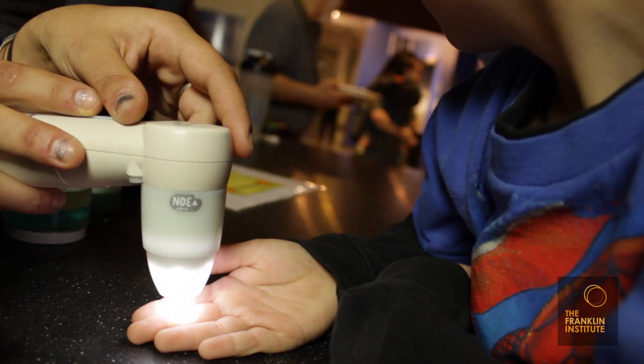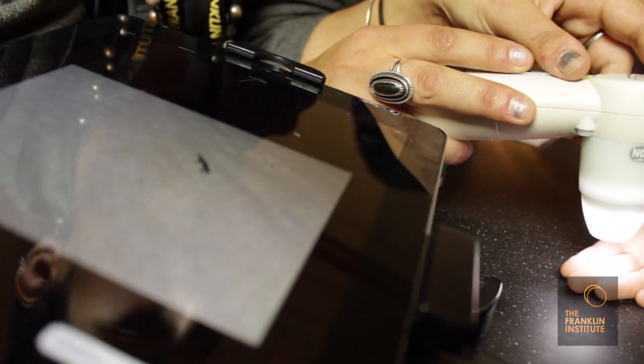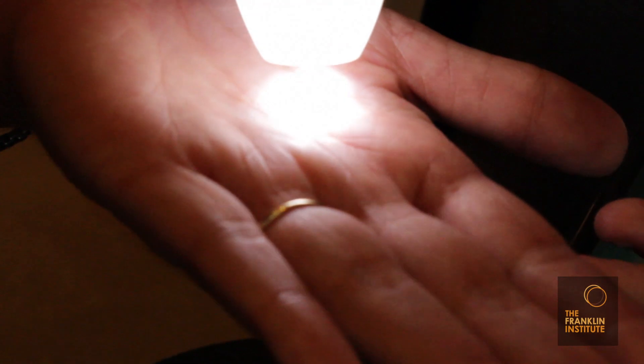At the table, we have a special device called the ProScope. It's a handheld microscope that allows us to get an up-close look at your hands and find hidden places where dirt can be trapped.